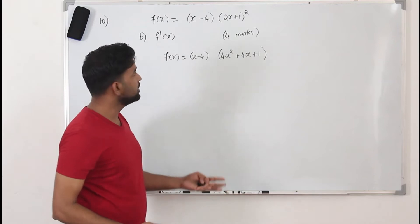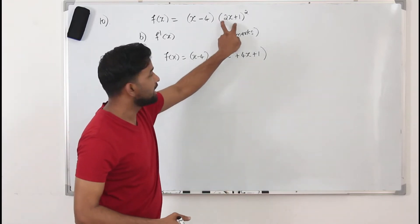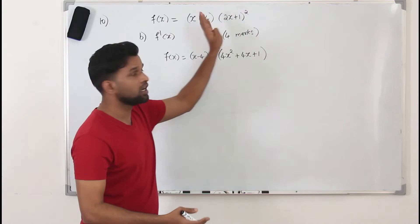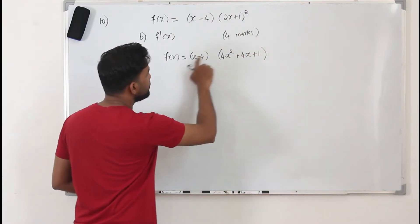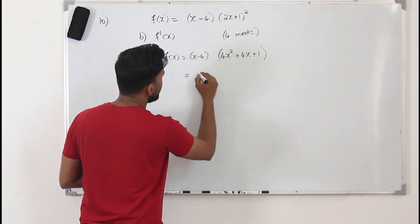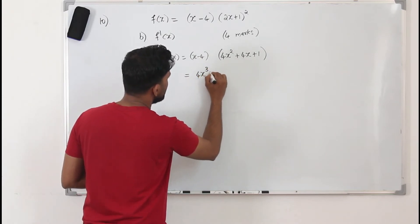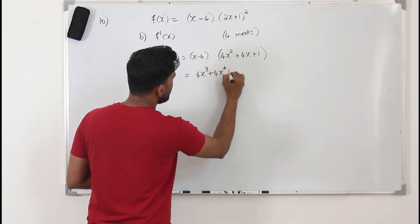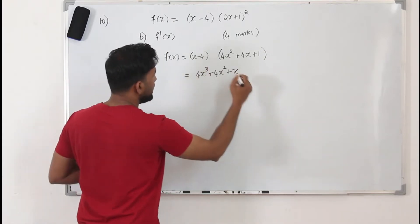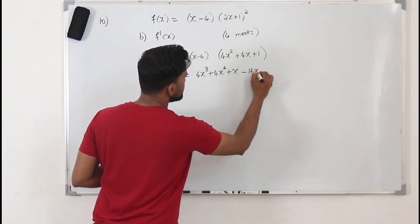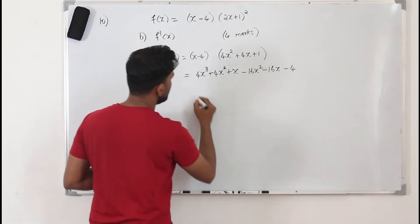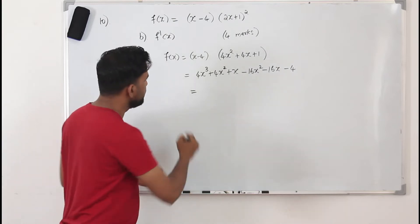If you don't want to apply the algebraic identity, write it as two factors: (2x + 1)(2x + 1) and multiply. Now you need to multiply everything by x and by minus 4. When you multiply by x, it will be 4x³ + 4x² + x. When you multiply by minus 4, it will be minus 16x² minus 16x minus 4. Now it's all about simplification.